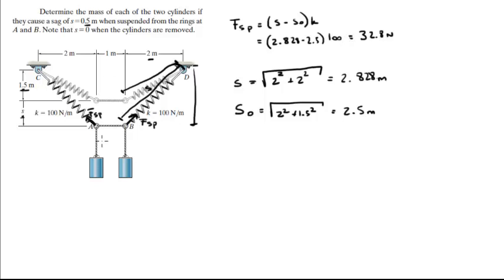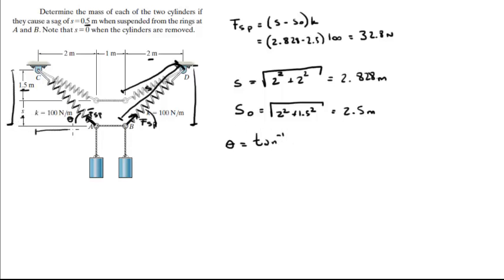This problem is very symmetrical. Let's find angle theta, which is the same on both sides. Theta is given by the tangent inverse of the opposite, which is 2, over the adjacent, which is also 2 — so 2 over 2 — giving us 45 degrees.